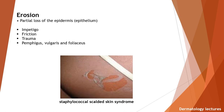Erosion is a partial loss of epidermis. Examples are impetigo, friction, trauma, pemphigus vulgaris, and folliculitis. Here you can see the example of staphylococcal scalded skin syndrome.